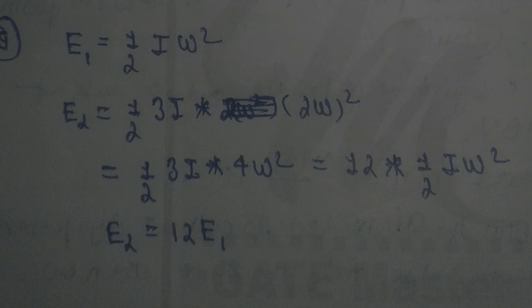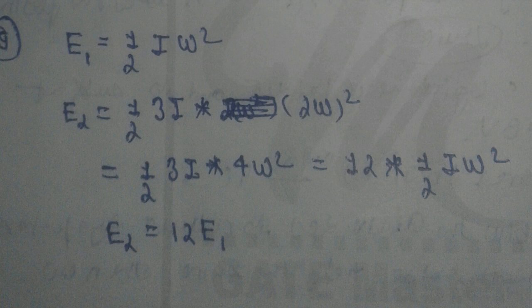For the solution of this question, follow the same rule: E = ½Iω². Let us suppose it is E1. Now taking E2, we have to triple I, multiply I by three times, and omega by two. So after solving we get E2 = 12 × ½Iω², and ½Iω² = E1, so E2 = 12E1. So the correct answer is 12.